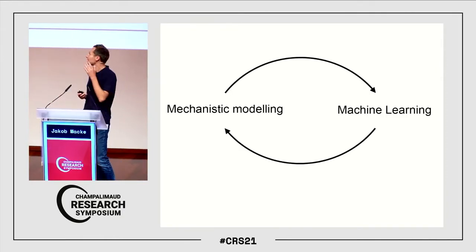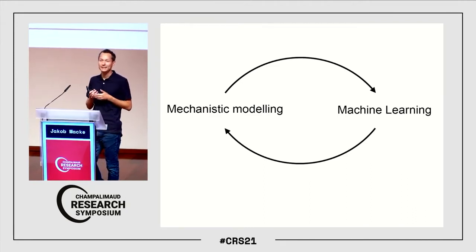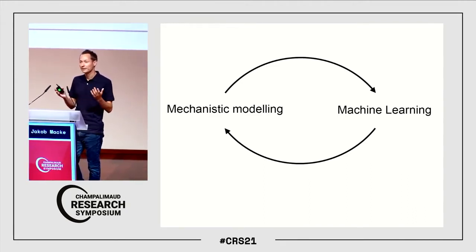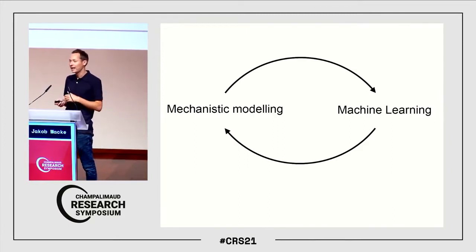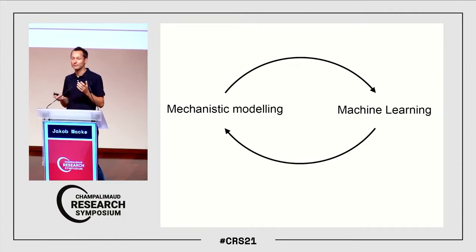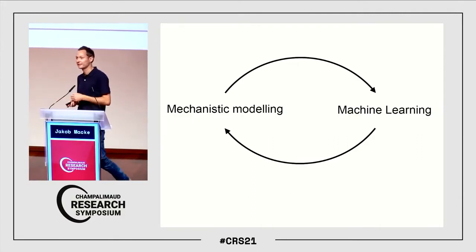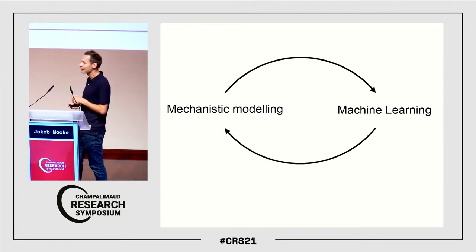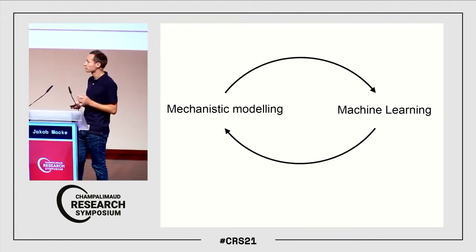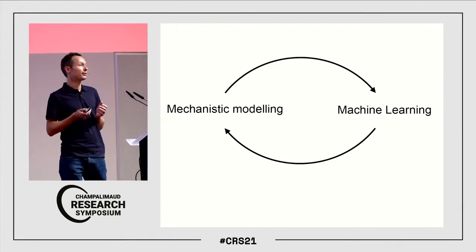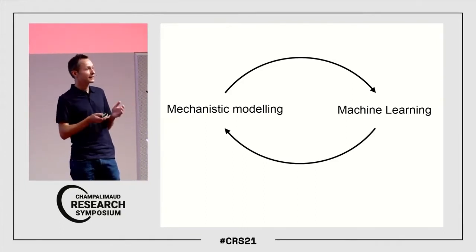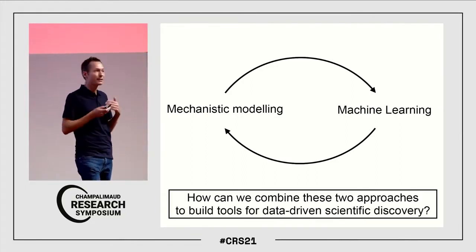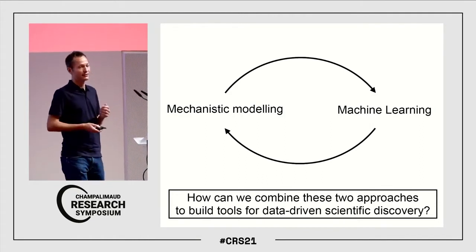In contrast, the way that neuroscientists and other scientists typically approach this problem is by building mechanistic models. We write down a model that encapsulates our assumptions about what we think generated the data, and then we compare this model to data, refine it and reject it — this iterative process gives us insights. What we try to do in our work is to combine the advantages of these different approaches: the data-driven nature of machine learning and the insight-driven nature of mechanistic modeling, in order to build better tools for data-driven scientific discovery.